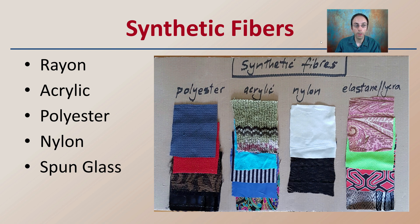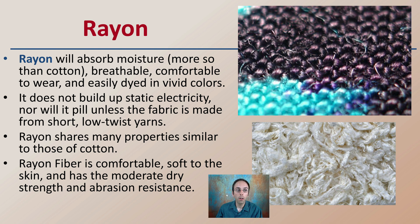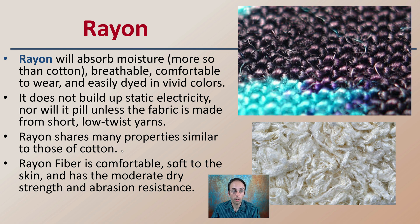Looking now at synthetic fibers — rayon, acrylic, polyester, nylon, and spun glass are the ones we'll be covering. Rayon absorbs moisture more so than cotton, is breathable, comfortable to wear, and easily dyed into vivid colors, making it a popular choice for clothing. It also doesn't build up static electricity, nor will it develop pilling unless the fiber is made from short, low-twist yarns.